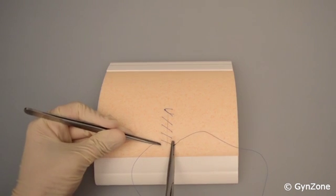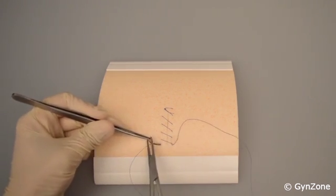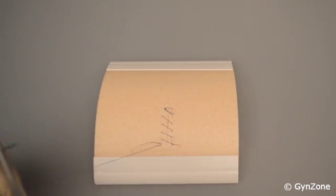Grip the needle with the dissecting forceps, release the needle holder and use it to pull the needle through while following the curvature of the needle.